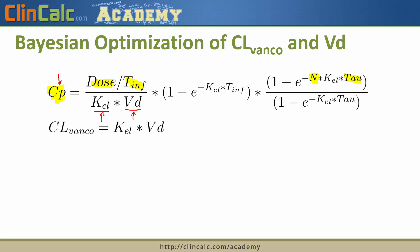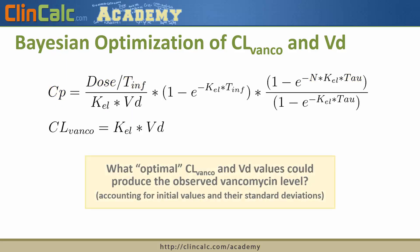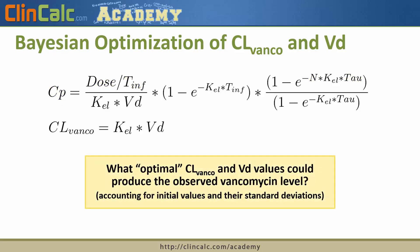Most papers involving Bayesian modeling with vancomycin discuss clearance of vancomycin as opposed to an elimination constant, and there is a relationship between these two variables. At the end of the day, Bayesian modeling is coming up with the most likely clearance and volume of distribution values that could produce the observed serum concentration collected from the patient, optimized based on those initial values and standard deviations from the pharmacokinetic paper — which hints at how much those variables may change between patients.